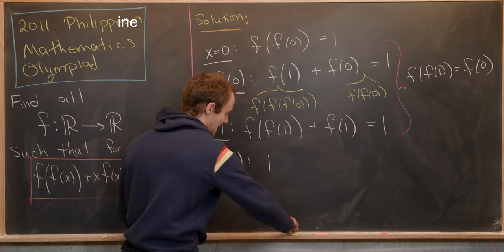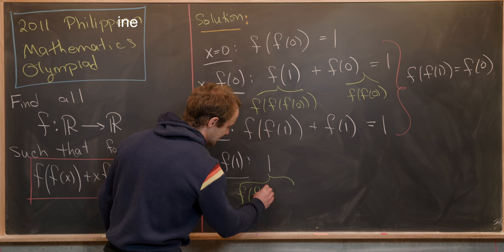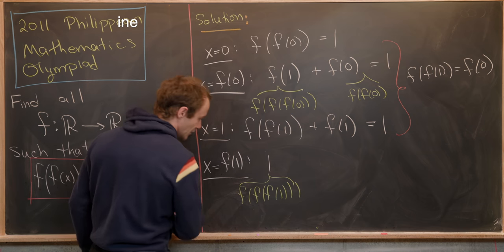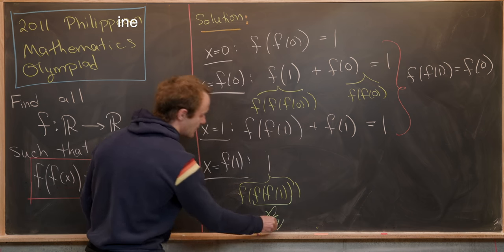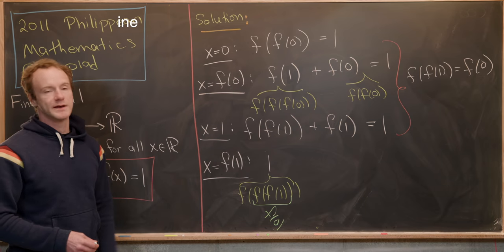So let's write that down. And then we'll expand this as it looks exactly in the functional equation. Where again, we use the fact that this inner part is f(0). And then our original equation tells us that is equal to 1.